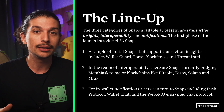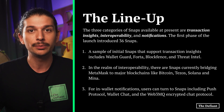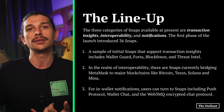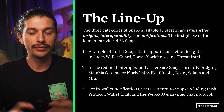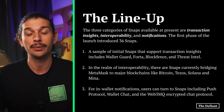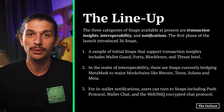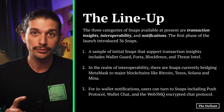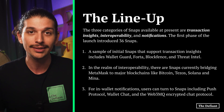The three categories of snaps available at present are transaction insights, interoperability, and notifications. The first phase of the launch introduced 36 snaps. A sample of the initial snaps that support transaction insights include WalletGuard, Forta, BlockFence, and ThreatIntel.